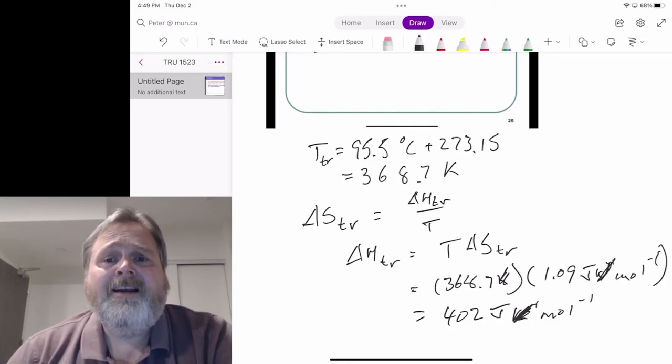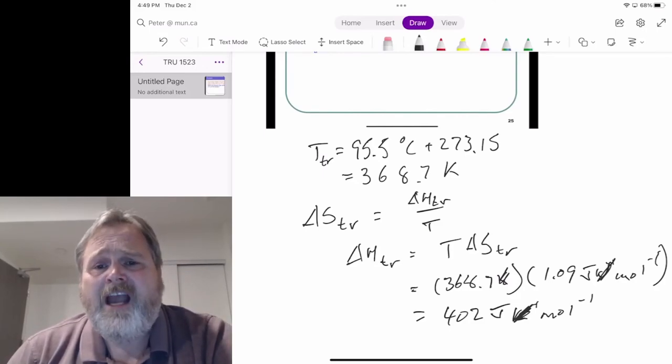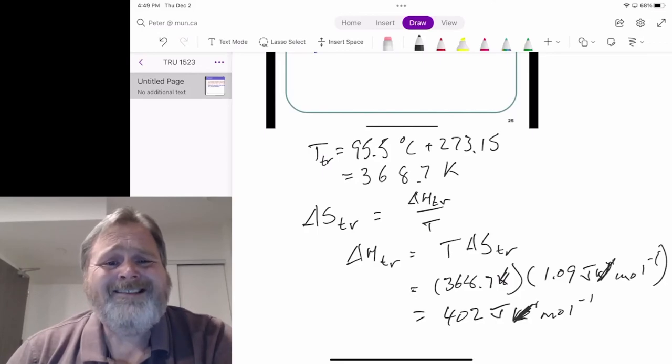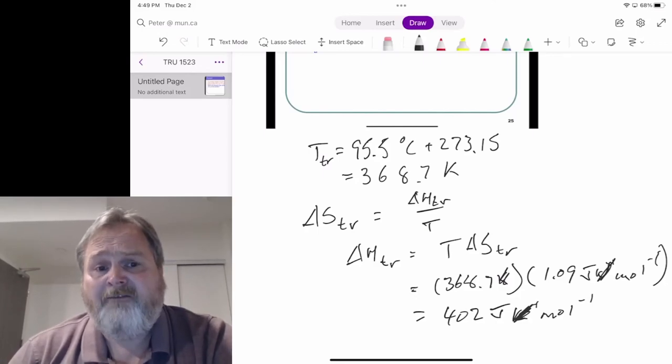In other words, we could take a mole of solid sulfur and using the energy of about one-tenth of a breath mint, we can accomplish the phase transition. That's not a lot of energy.